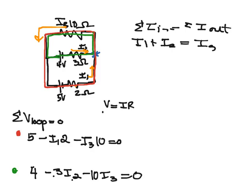Okay, so now I have my three equations, right? I have equations 1, 2, and 3, and I have three unknowns, so I can solve for each one of my currents.